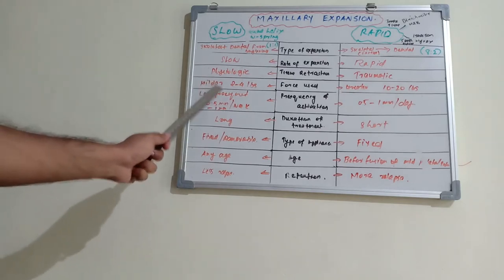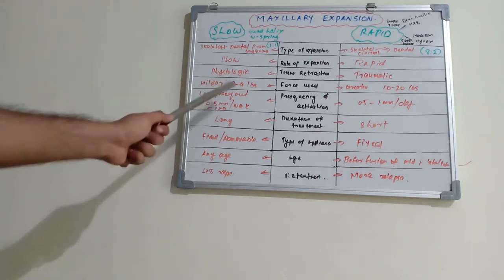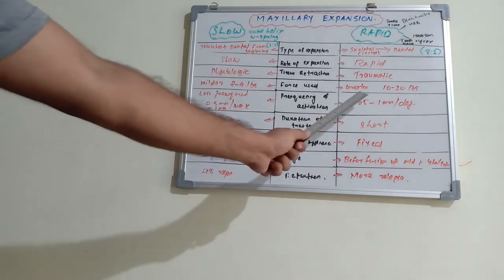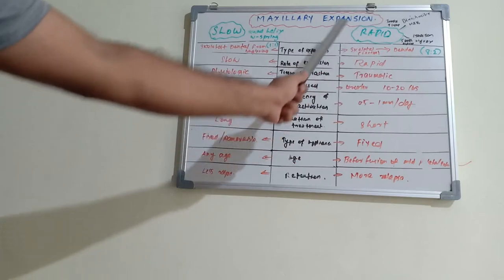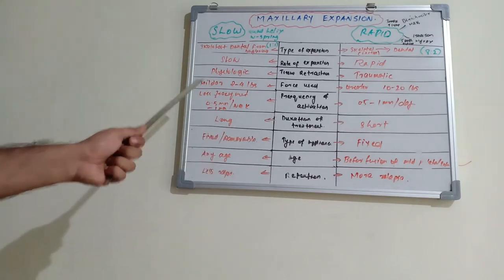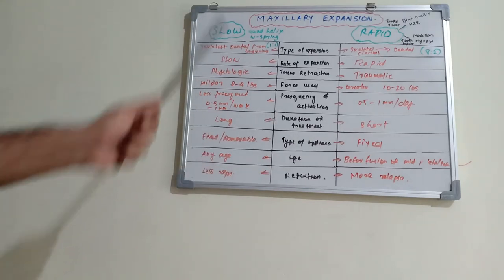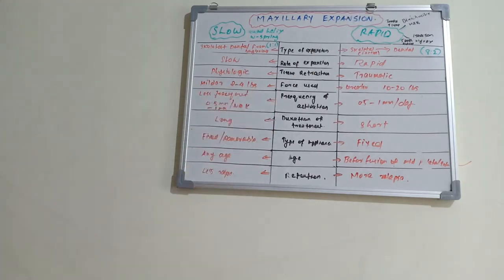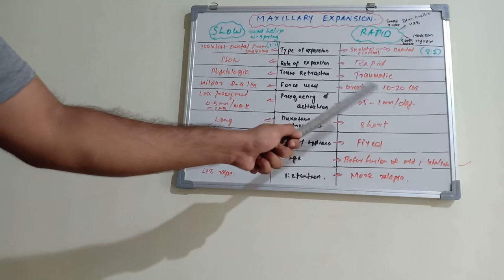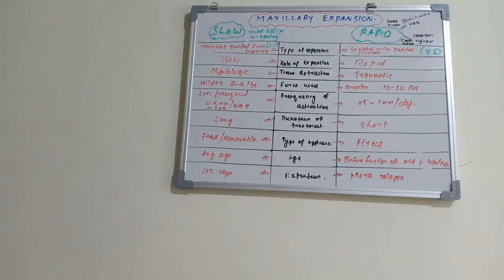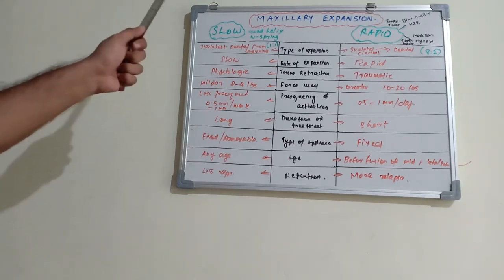Regarding the force used: in slow expansion it is a milder force, that is 2 to 4 lbs, whereas in rapid expansion it is greater, at 10 to 20 lbs. The frequency of activation is lower and less frequent in slow expansion, at 0.5 to 1 mm per week, but in rapid expansion it is 0.5 to 1 mm per day.